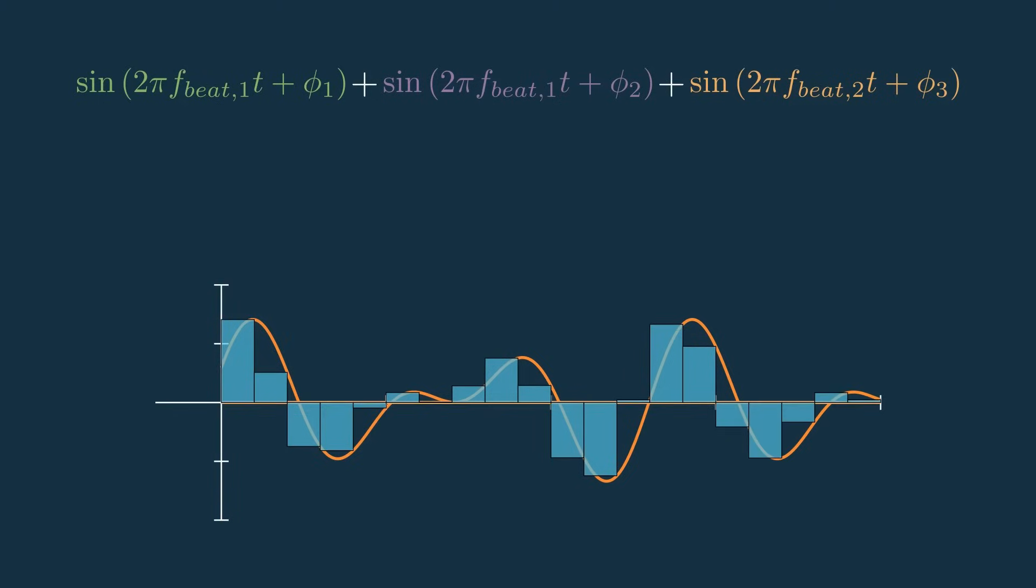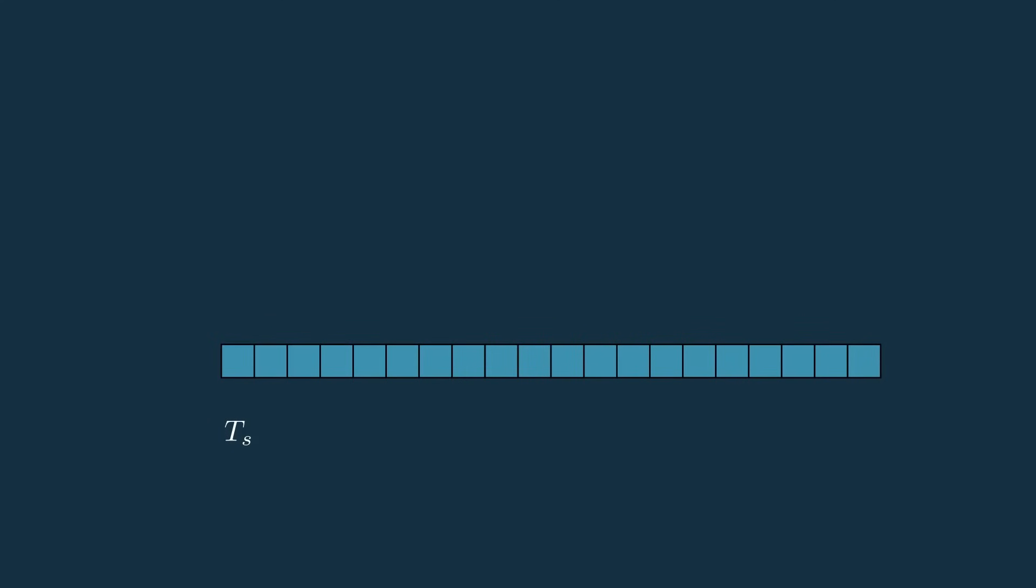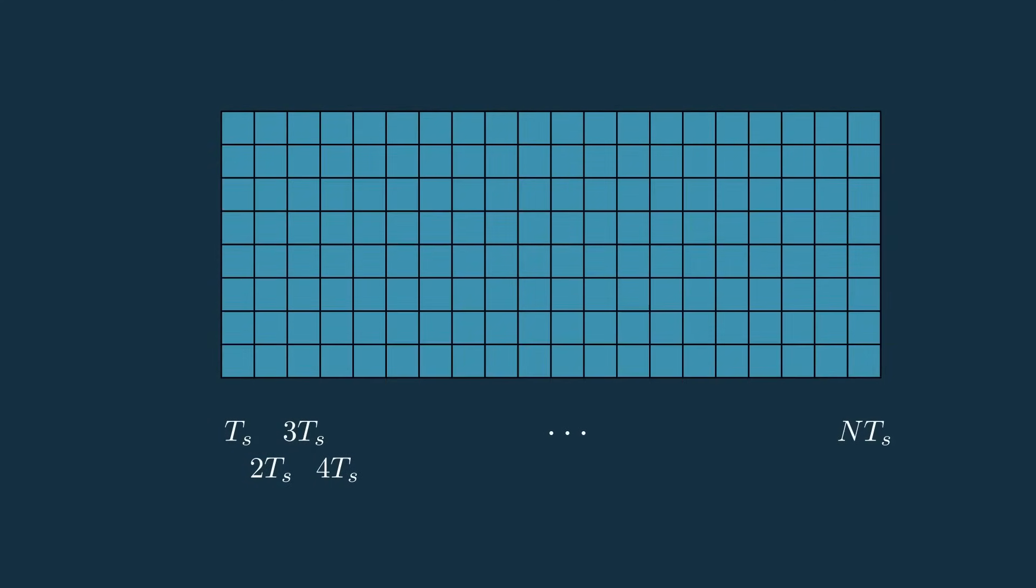We can then sample this and get a one-dimensional set of data where the difference between samples is our system's sampling period, Ts. Then, if we wanted to compare targets phases from chirp to chirp, we could transmit more chirps and take another set of measurements. That means that this difference between the y-axis samples would be the chirp time, or Tc. And this is a super common data arrangement you'll see in range Doppler processing where the x-axis is called the fast time axis and the y-axis is called the slow time axis since the sampling frequency, Ts, is much faster than the chirping frequency, Tc.